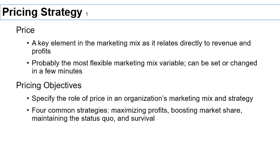Price is unique in many ways. Most importantly, it directly relates to revenue. Revenue is price times quantity — the amount of units you sell multiplied by the price. So price is directly related to revenue, and revenue is directly related to profit.